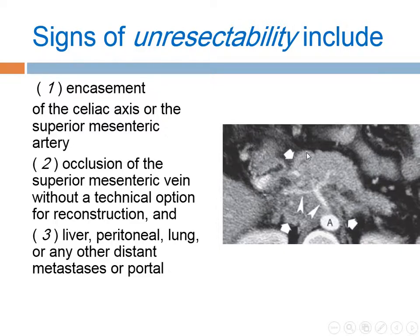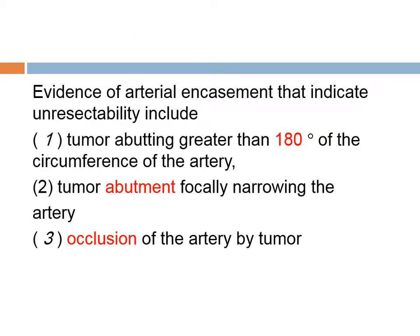The main things we need to focus on are metastasis and encasement. If there is vessel invasion or metastasis, it is unresectable. Here we have the celiac trunk involved and encased by the pancreatic mass — unresectable. Evidence of arterial encasement includes tumor abutting greater than 180 degrees of the circumference of the artery, or focally abutting causing narrowing or occlusion of the artery by the tumor.